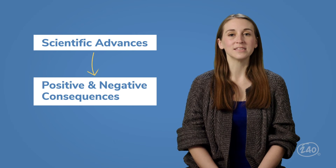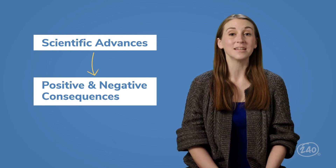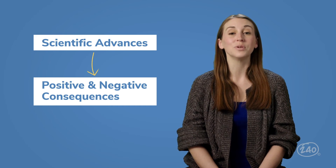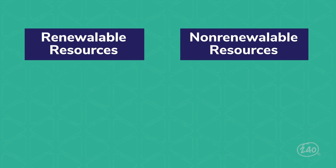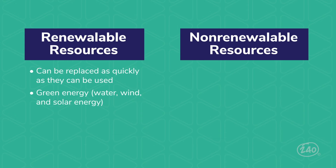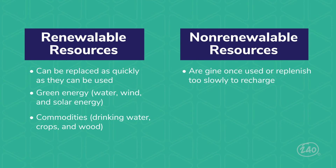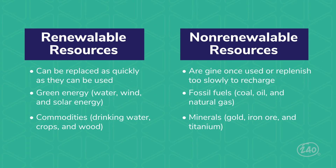Last but certainly not least is the Impact of Science. This subcategory focuses on all the ways that science can impact life on Earth, both positively and negatively. You'll need to know how scientific advances lead to major improvements like the combustion engine, the internet, and stem cell technology, but also how advances in technology have led to increased greenhouse gas emissions and ethical considerations surrounding different types of experimentation. Another hot topic: renewable versus non-renewable resources. Renewable resources — like water, wind, and solar energy, as well as drinking water, crops, and wood — can be replaced about as quickly as they are used. Non-renewable resources, like fossil fuels such as coal, oil, and natural gas, and minerals such as gold, iron ore, and titanium, are gone once used or replenished too slowly to recharge.